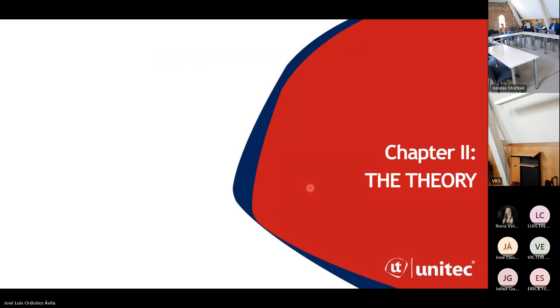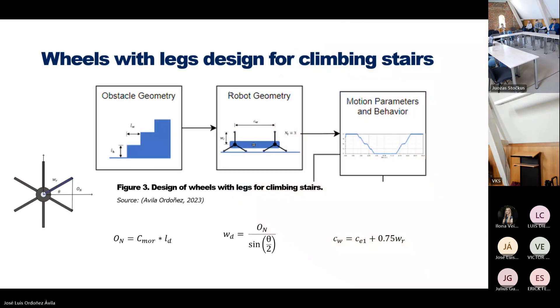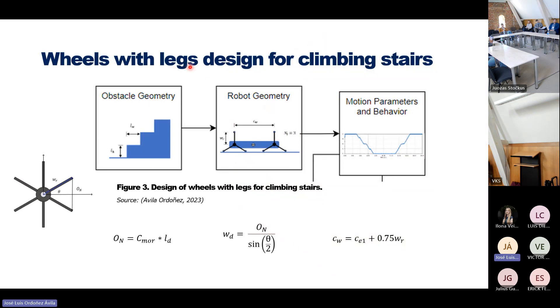Now let's see a little bit of theory. This is based on legs design for climbing upstairs. This is a paper we published last year about how the robots should go upstairs by relating their leg opening. We try to relate this opening with the dimensions of the obstacle, in this case the diagonal that the upstairs have.